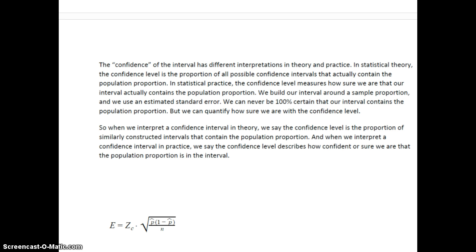What does it mean to be a confidence interval? The confidence level — for example, a 95% interval — is the proportion of all possible confidence intervals that actually contain the population proportion. If we were to construct sample after sample, we'd get slightly different sample proportions and slightly different confidence intervals. For a 95% confidence interval, 95% of all those intervals will contain the true population proportion p, and 5% will not.